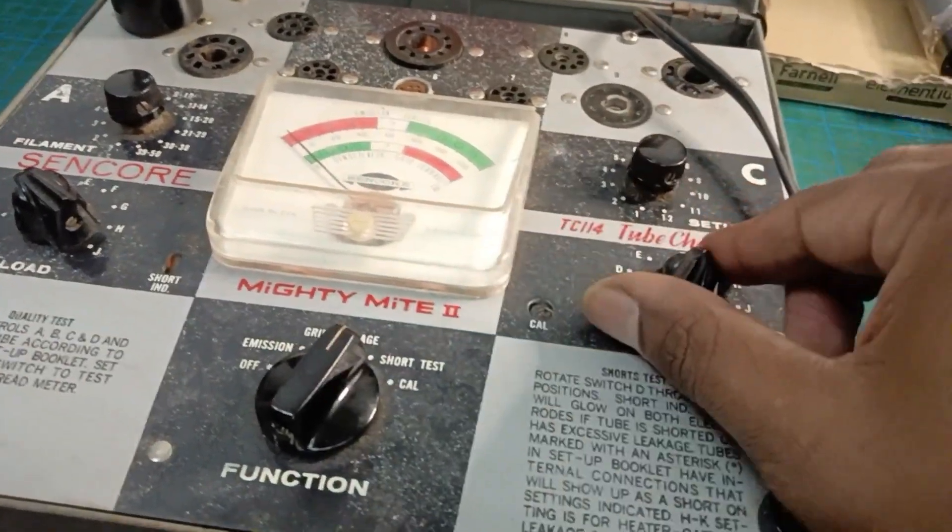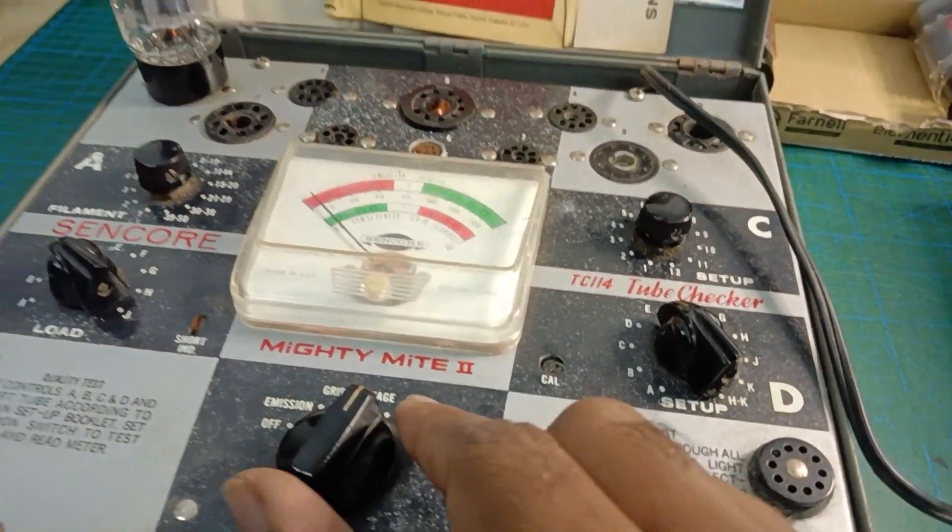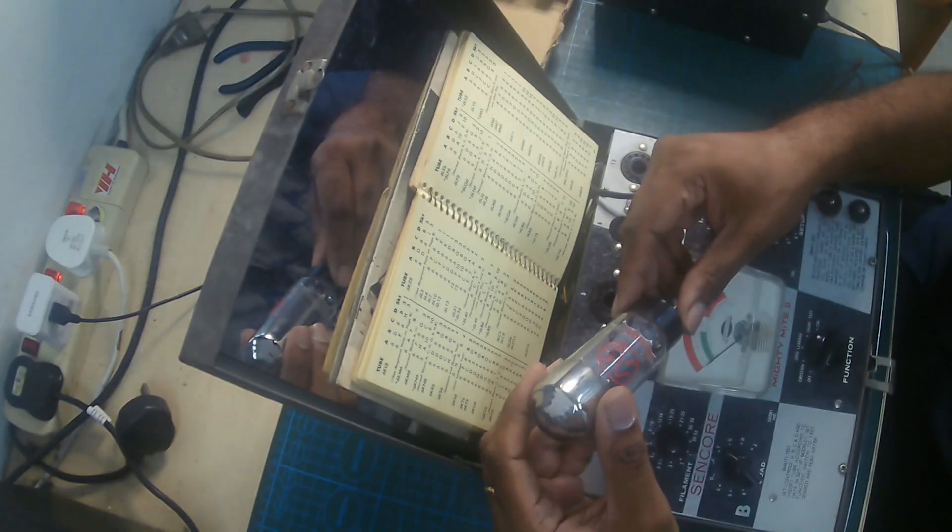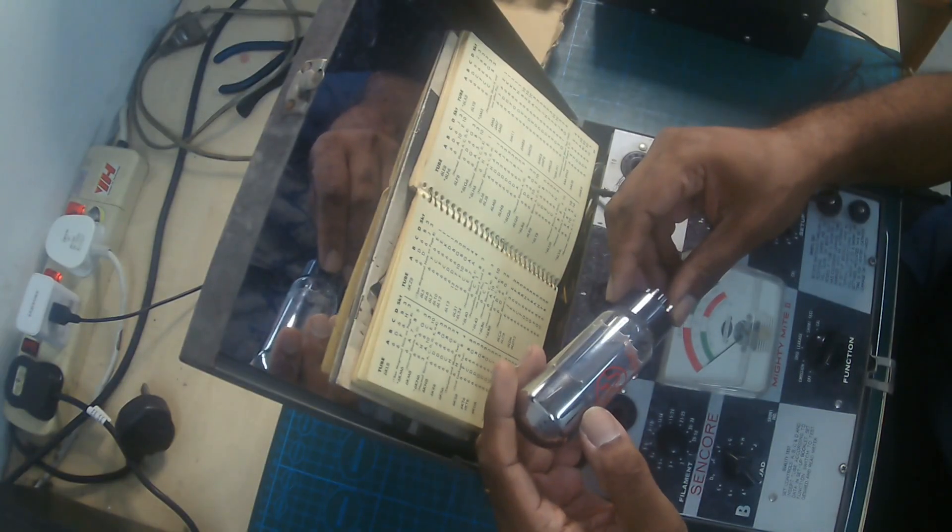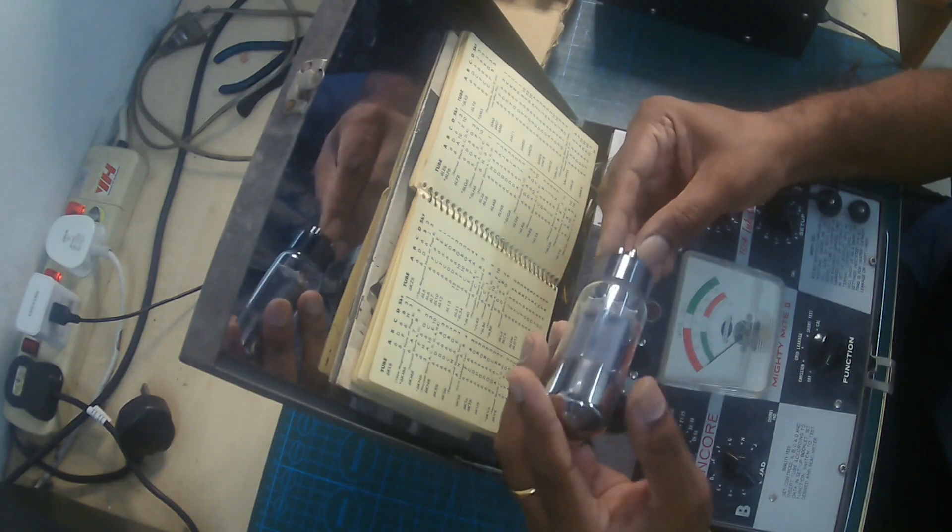Now we will repeat this test and explain more in detail. I am testing four pieces of 6L6 tubes from a Marshall tube amp. In this video, I will show the test of one tube.